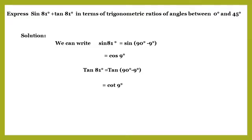Therefore, sin 81 degrees plus tan 81 degrees is equal to cos 9 degrees plus cot 9 degrees.